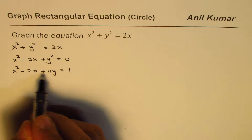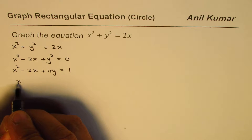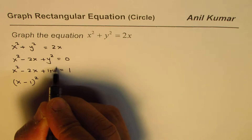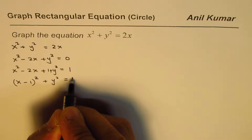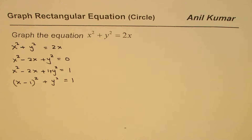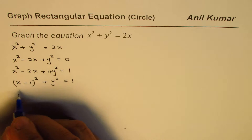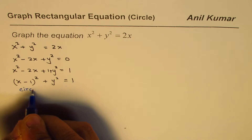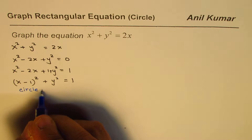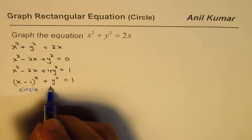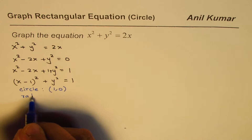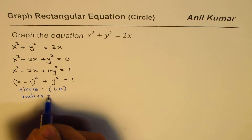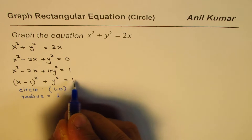The first three terms become a perfect square, which we can write as (x minus 1) squared, plus y squared equals 1. This is the equation of a circle whose center is at the point (1, 0) and whose radius equals 1 unit.